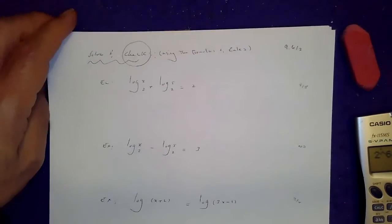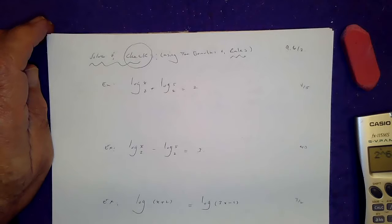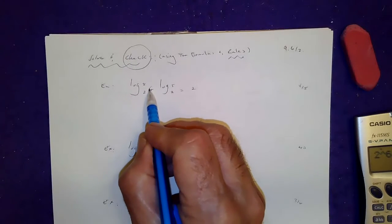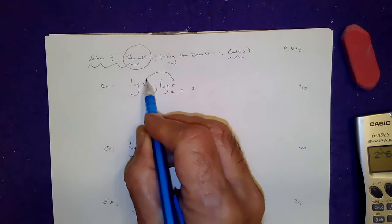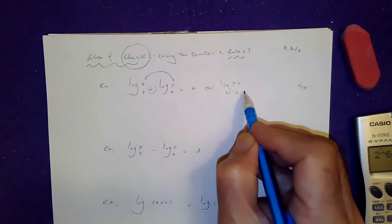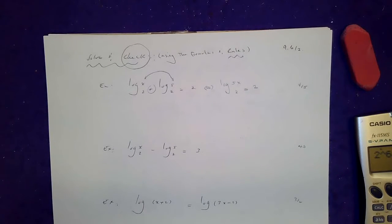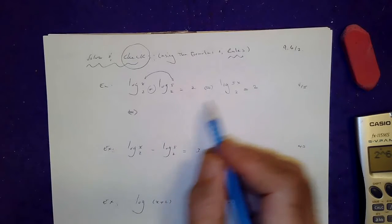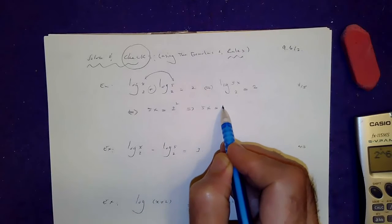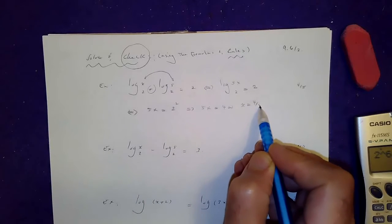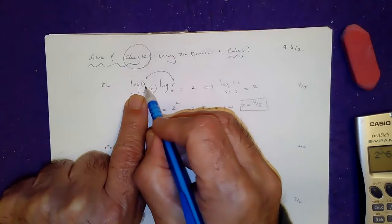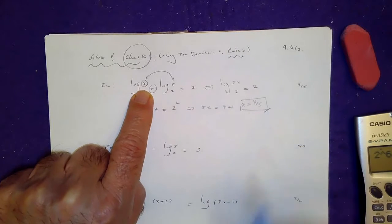Sometimes you have to use the logarithm rules to find x, and you must check the answer if logs are involved. If you have addition of two logs, that comes from the product rule, so combine them as a single log: log base 2 of x times 5 — which is 5x — equals 2. Convert to exponential form: 5x equals 2 squared equals 4, so x equals 4 over 5. The logarand is positive, so it passes the test.